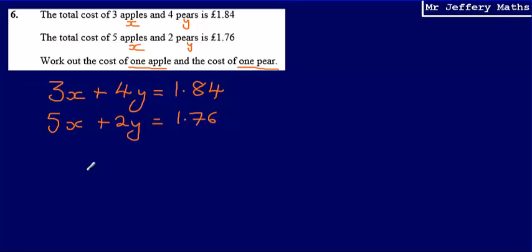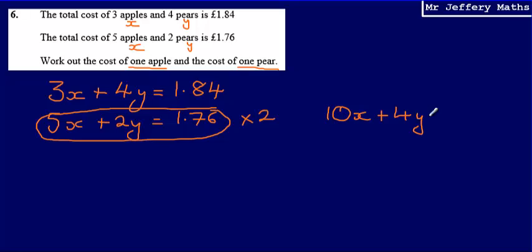So we've got our simultaneous equations. All that's left to do is to solve them. So the way that I'm going to do this, if I look at these, I think the easiest way to solve this is by elimination. And so what I'm going to do is I'm going to take this equation on the bottom here, and if I multiply that by two, that is going to give me 10x plus 4y and will be equal to £3.52.